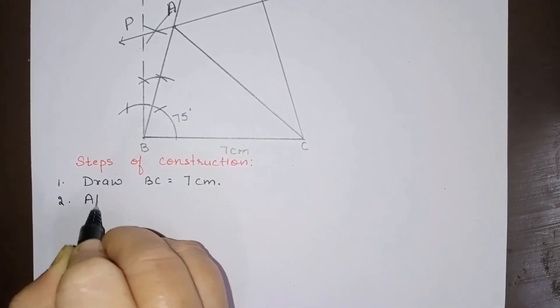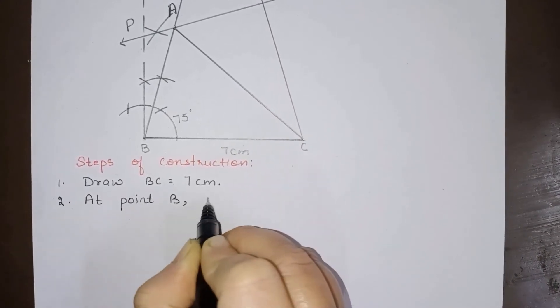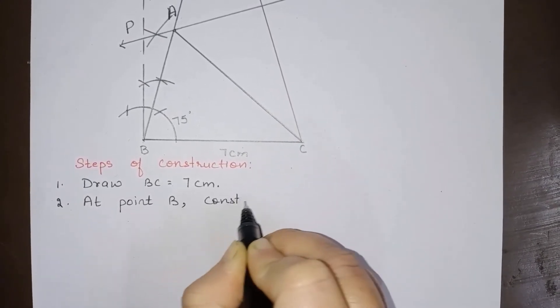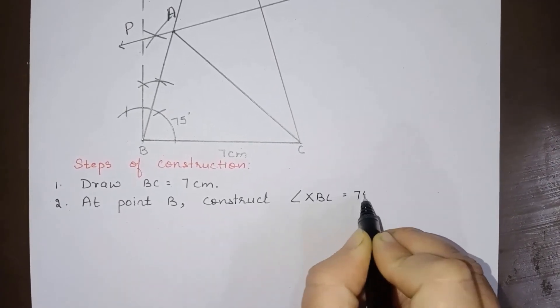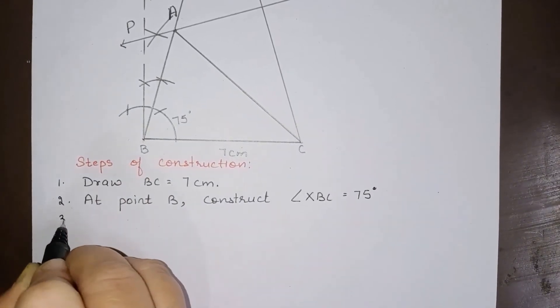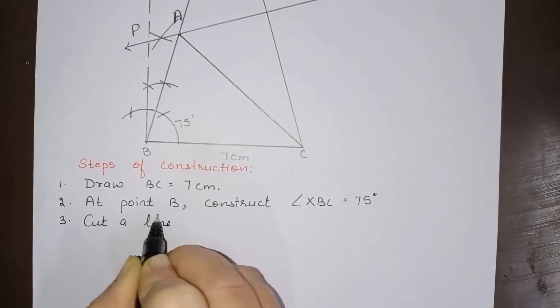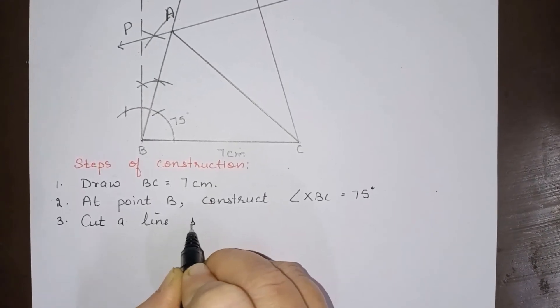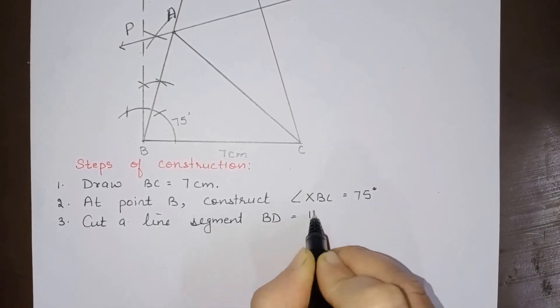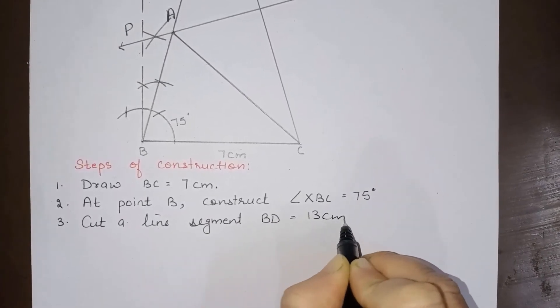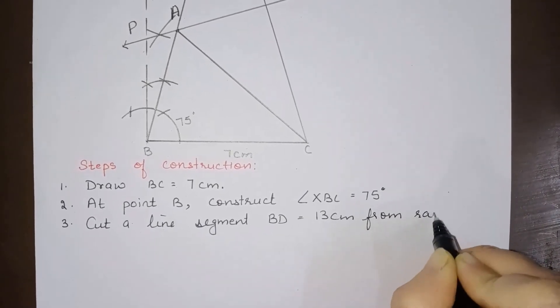Second step will be: at point B construct angle XBC equals 75 degrees. Third step is cut a line segment BD equals 13 centimeters from ray BX.